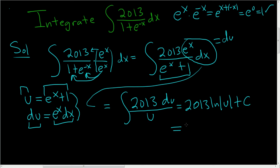So this is equal to 2013, natural log. What was u? Oh, it's over here. I'm really glad we write it down because I always tend to forget. e to the x plus 1, plus a constant. So that is the answer.